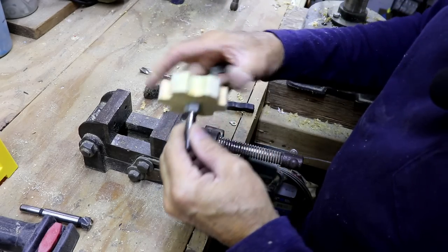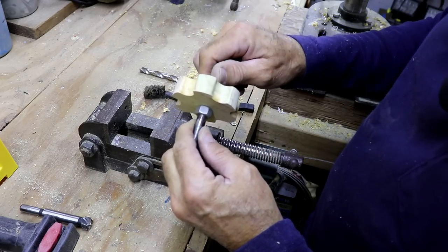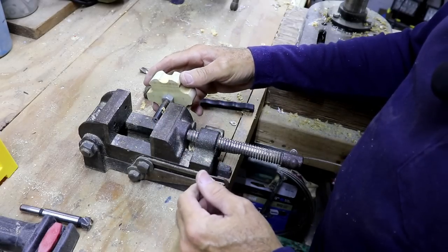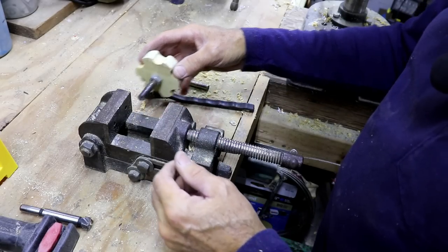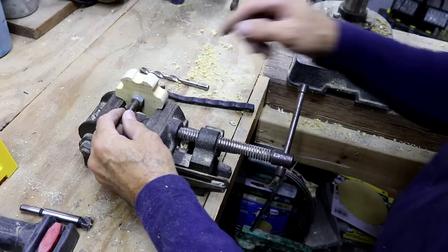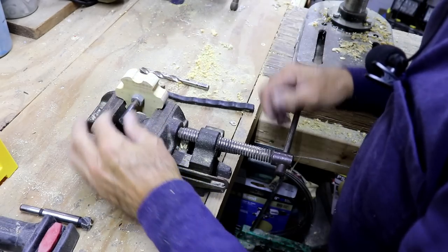All right, now we can join the handle to the tool itself, and I want to be able to put a drift pin in it just to lock it in place, so I know the handle will never spin on the shaft. So, drill a hole in it for a drift pin.